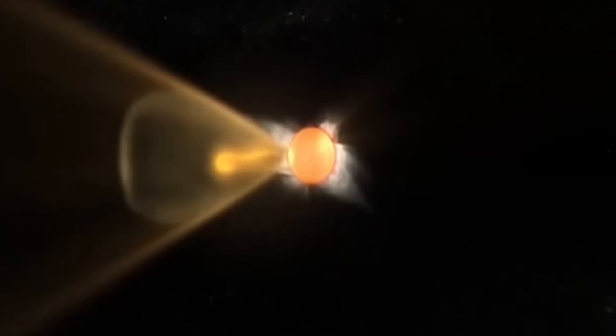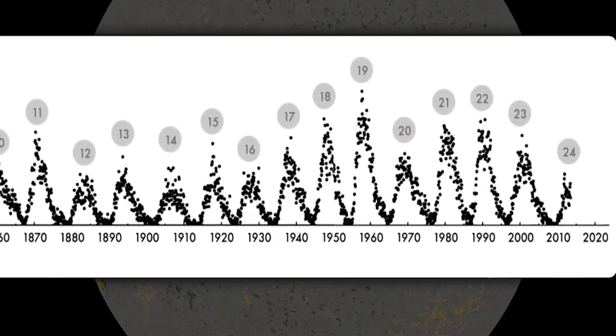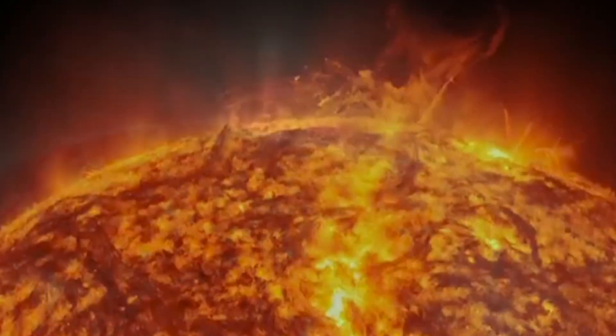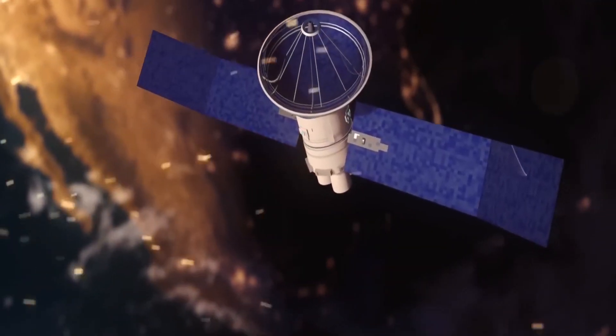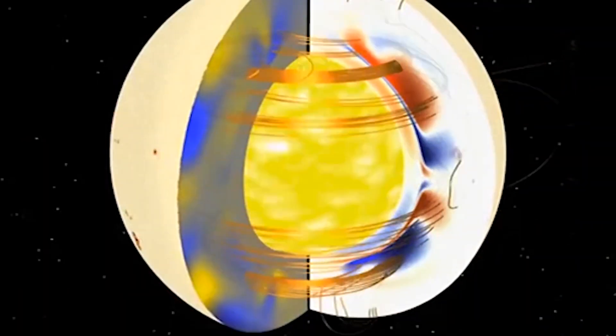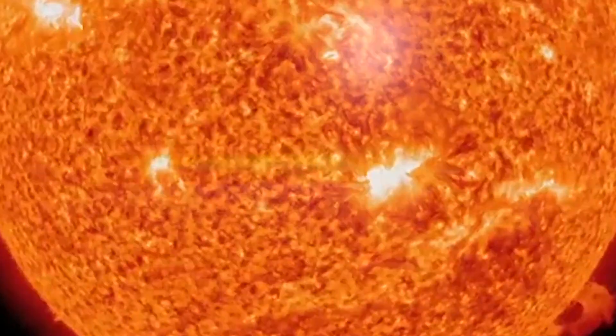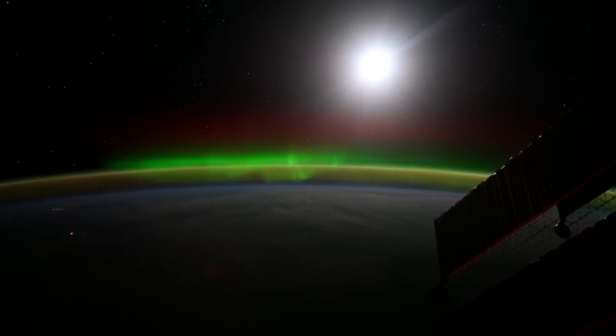While the sun's magnetic flip might sound like a distant cosmic event, it has real-world implications that could affect everything from your GPS system to your power supply. During periods of increased solar activity, the likelihood of powerful geomagnetic storms increases, posing a significant threat to modern infrastructure.